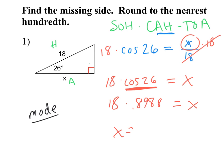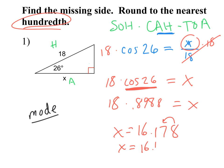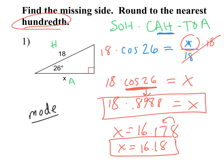18 times cos(26°) gives you approximately 16.17829283. Rounding to the nearest hundredth: the 8 tells me to round up, so the answer is 16.18. You can also type this all in one shot: 18 × cos(26°) gives the same answer of 16.18. That's example one for solving for a missing side.